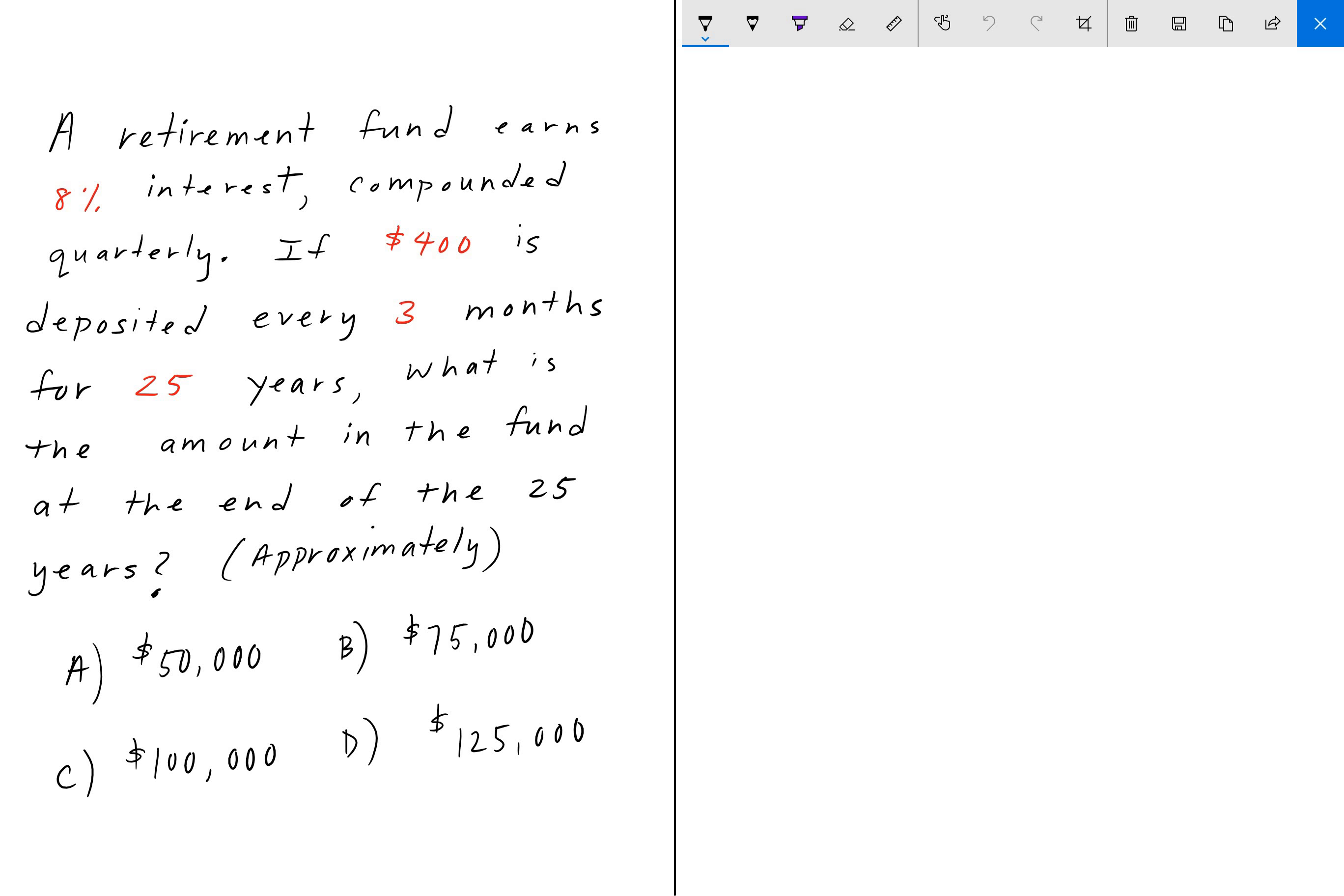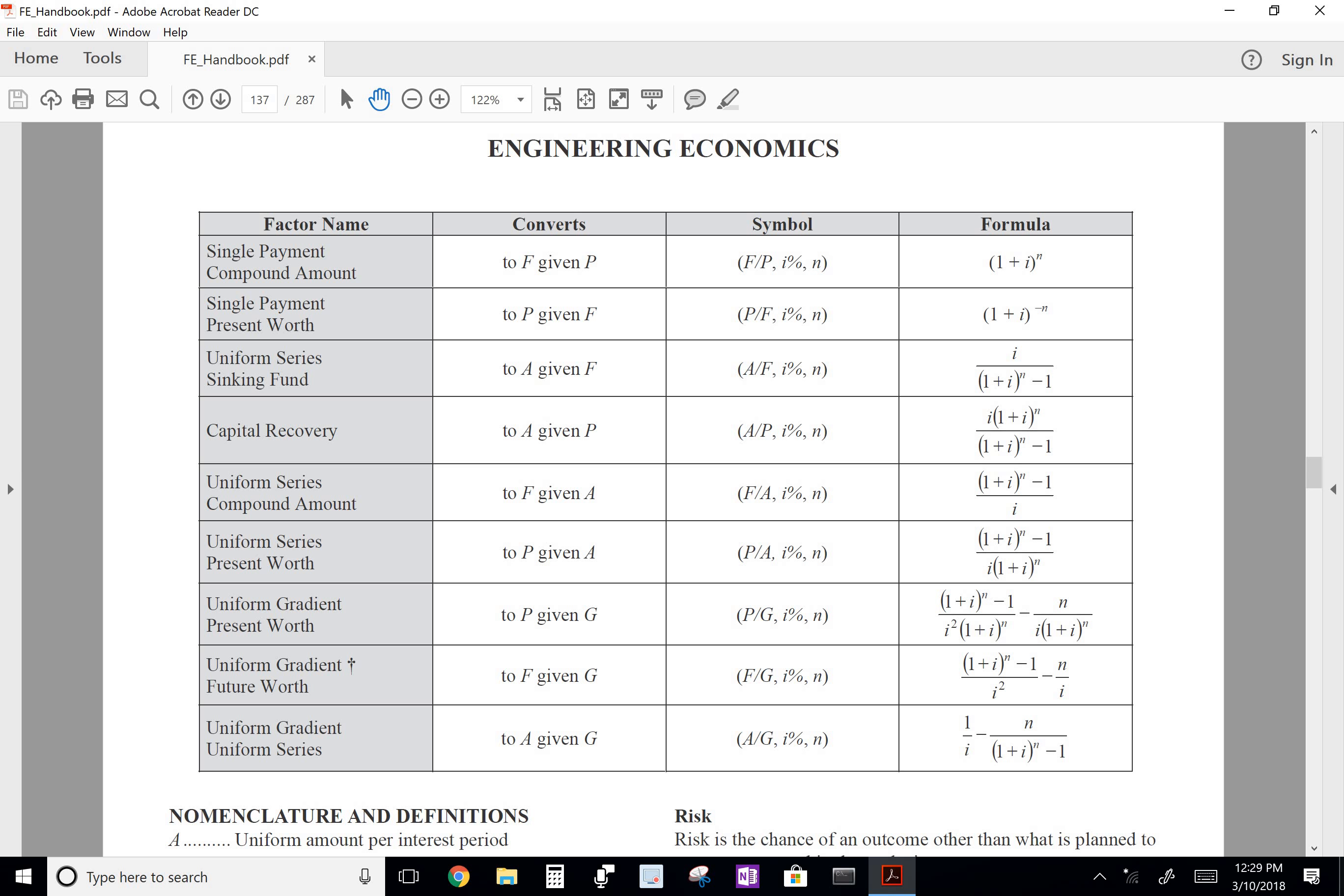To go ahead and solve this, you can turn to the FE handbook where they'll give you some equations, but I didn't really find the FE handbook all too helpful. I'll show you anyway. Here is the Engineering Economics section where we have the different values. F stands for future value, P stands for present value, A stands for the payment amount or sometimes the annuity, and G is what's called the uniform gradient.